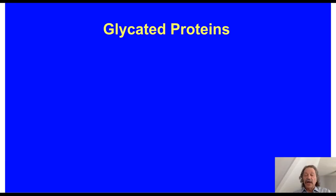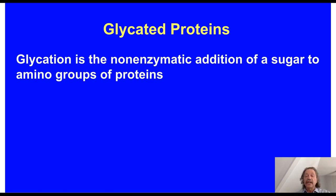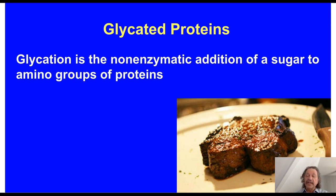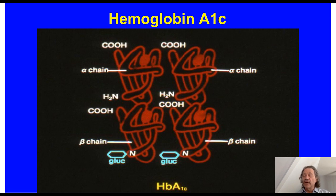Let's talk about glycated proteins and the definition of glycation: the non-enzymatic addition of a sugar to amino groups of proteins. This was first described in the food industry more than 100 years ago by Maillard — the beautiful color on the outside of a steak is due to glycation. In humans, most proteins get glycated, but for convenience, since we can easily draw a blood sample, we measure glycated hemoglobin. The analyte measured most frequently in the world is hemoglobin A1c — hemoglobin specifically with glucose attached to the N-terminal end of the beta chain.